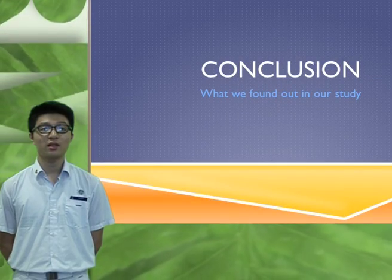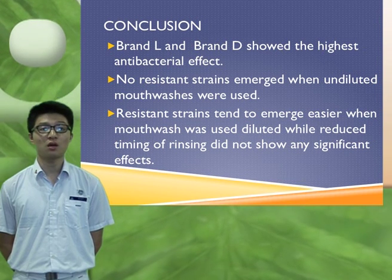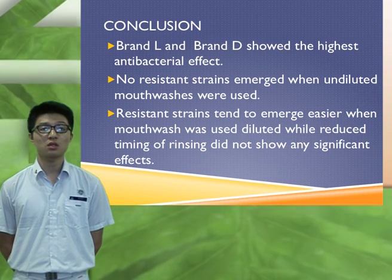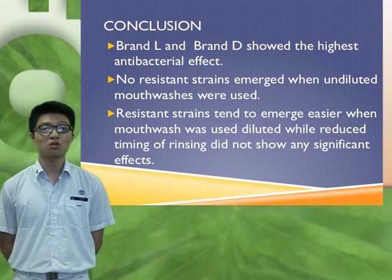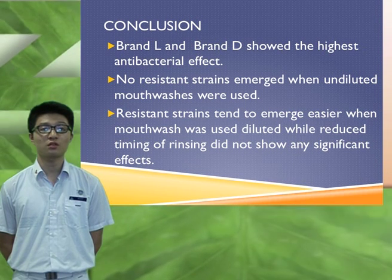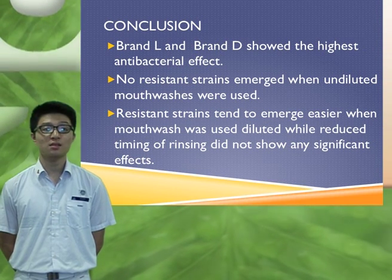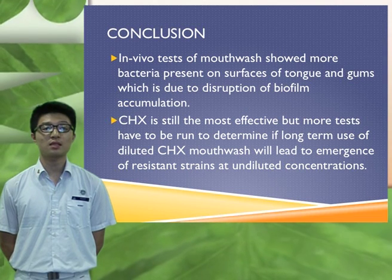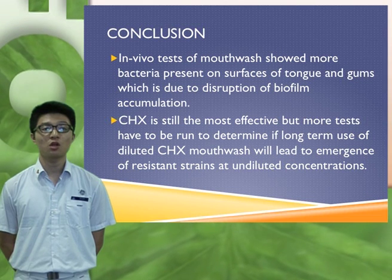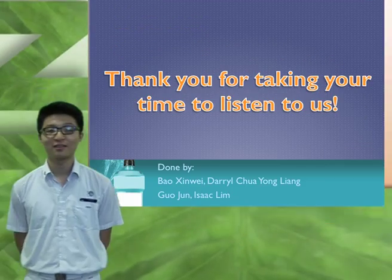Our conclusions: Brand L and brand D showed the highest antimicrobial effect. No resistant strains emerged when undiluted mouthwashes were used. Resistant strains tended to emerge more easily when mouthwashes were diluted, while reduced rinsing time did not show any significant effects. In vivo tests showed more bacteria present on the surface of the tongue and gums, which is due to the disruption of biofilm. CHX is still the most effective, but more tests have to be run to determine if long-term use of diluted CHX mouthwash will lead to the emergence of resistant strains at undiluted concentrations. Thank you.